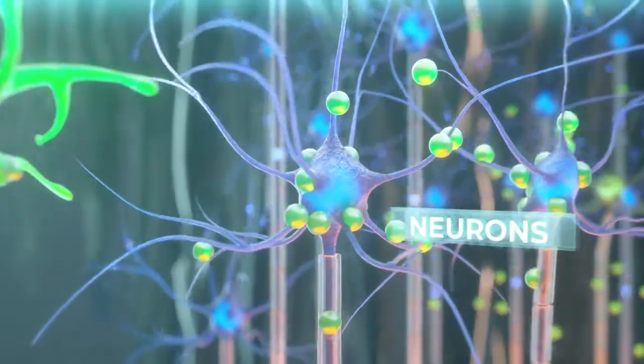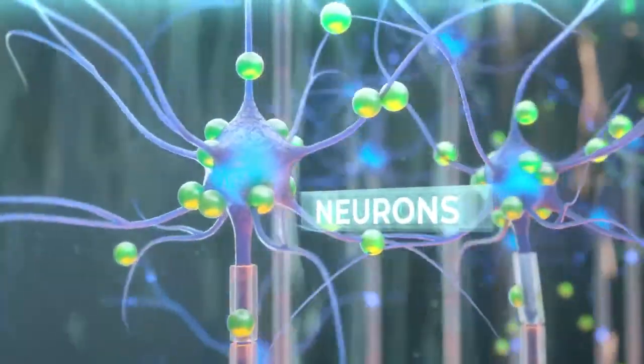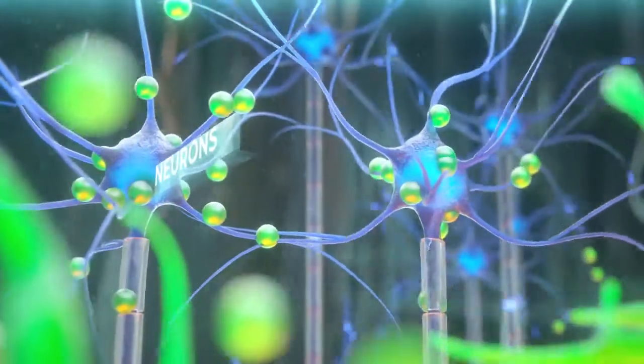Normally, astrocytes, the CNS supporting cells, aid the well-being of neurons by several mechanisms.